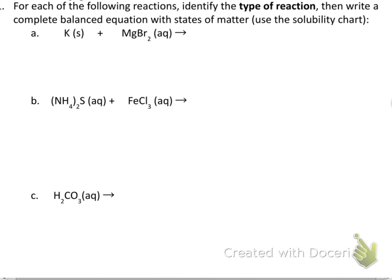Looking at this reaction with K and MgBr₂: MgBr₂ is an ionic compound because it has a metal and a nonmetal. The K is an element because it's a metal in the solid state with nothing connected to it. That means this is going to be a single displacement, because that's the only reaction type that has a metal as a free element.